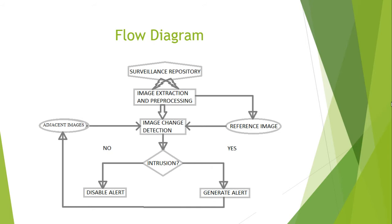This is a top-level flow diagram for my project. I have a surveillance repository — I use a sample video from YouTube. I extract frames from the video and store them in a surveillance repository. Once I extract the images, I perform pre-processing, which basically improves the quality of the images. After pre-processing, I detect if there has been any change in the set of images.